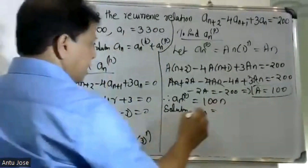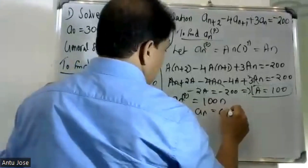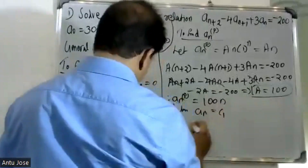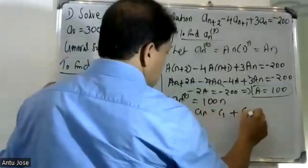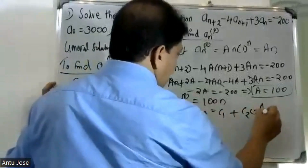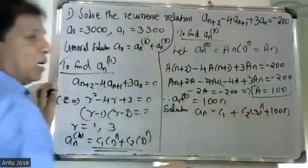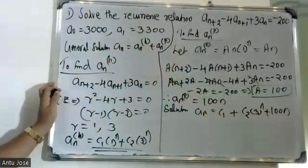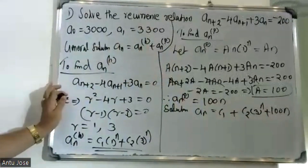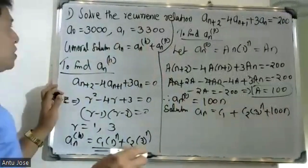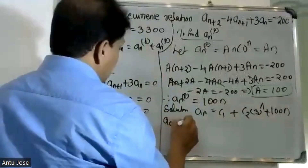Therefore the general solution is a(n) equals C1 into 1 raised to n plus C2 into 3 raised to n plus 100. Applying initial condition a(0) equals 3000: C1 plus C2 plus 100 equals 3000.